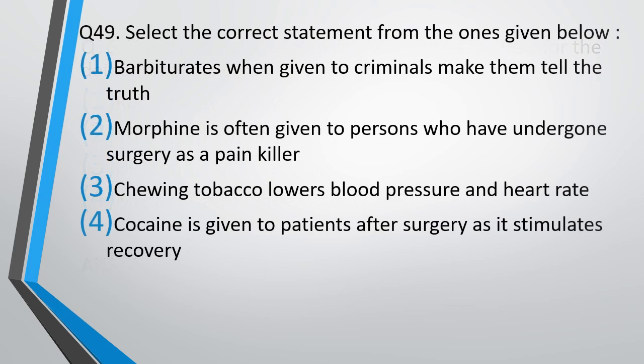Question number 49. Select the correct statement: Barbiturates when given to criminals make them tell the truth. Morphine is often given to persons who have undergone surgery as a painkiller. Chewing tobacco lowers blood pressure and heart rate. Cocaine is given to patients after surgery as it stimulates recovery. The correct answer is option 2.